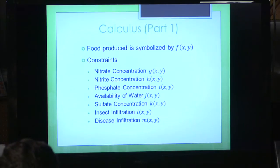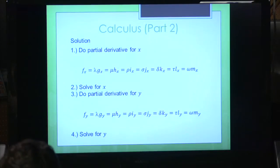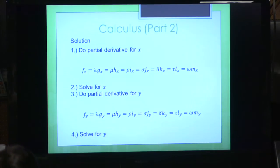There are still other nutrients plants need, and you could also factor in the cost of getting everything and being sustainable. You partially differentiate for x for each and every single constraint, which has a different Lagrange multiplier for each one, and then do that again for y.